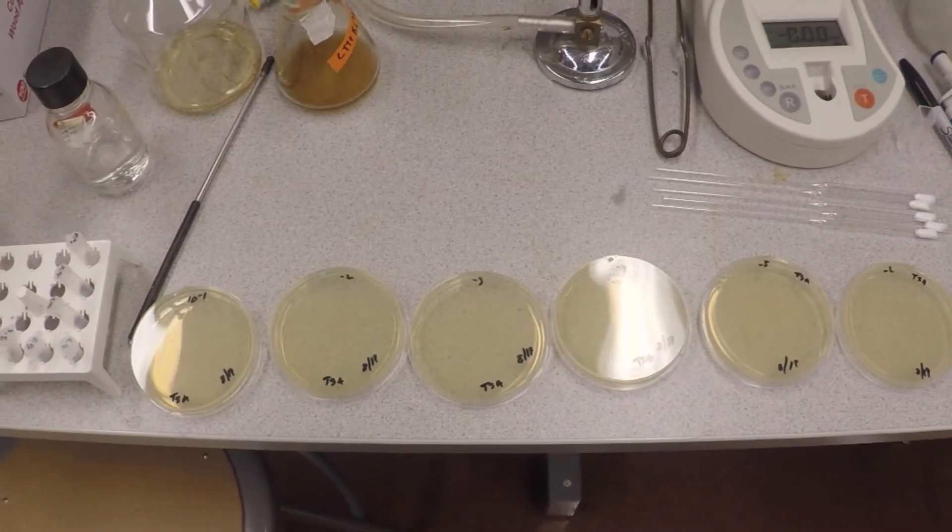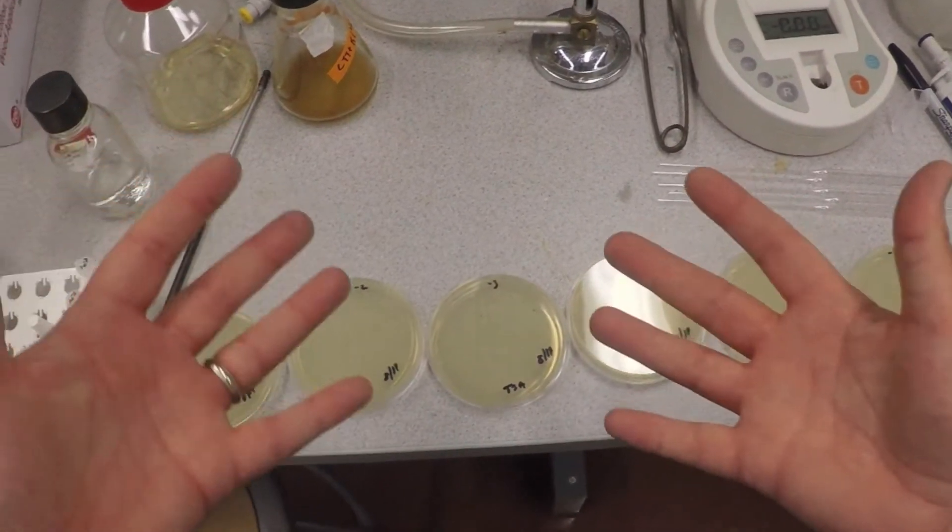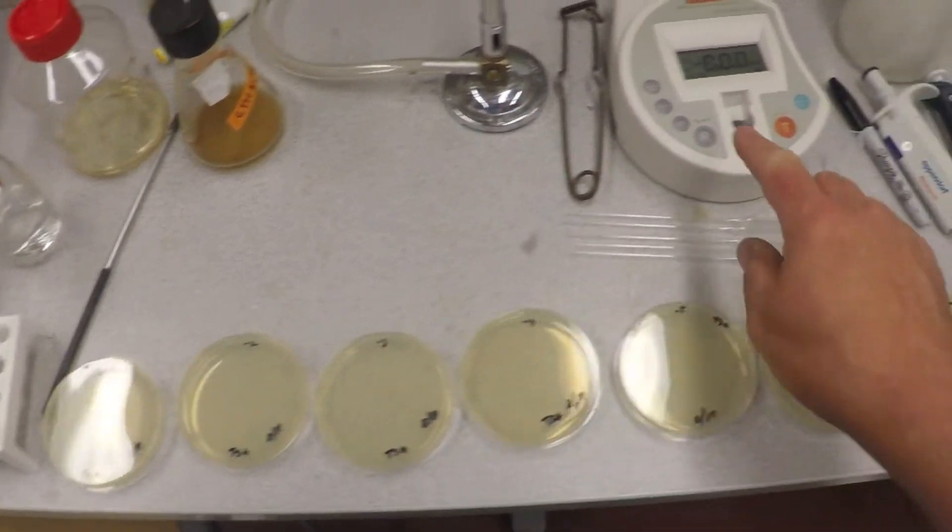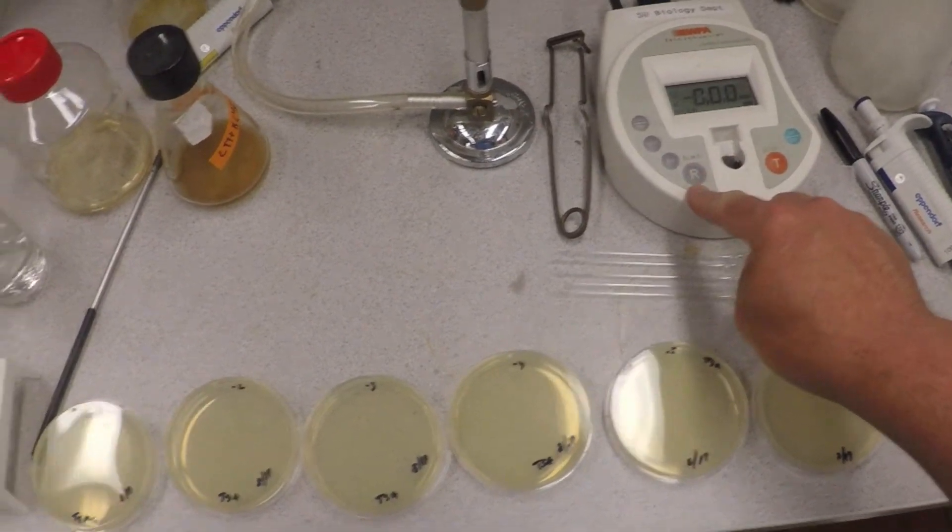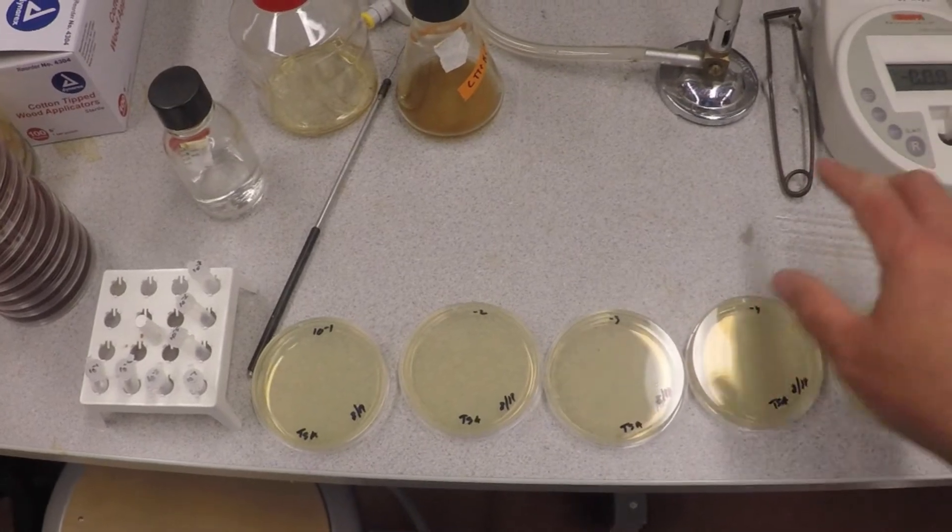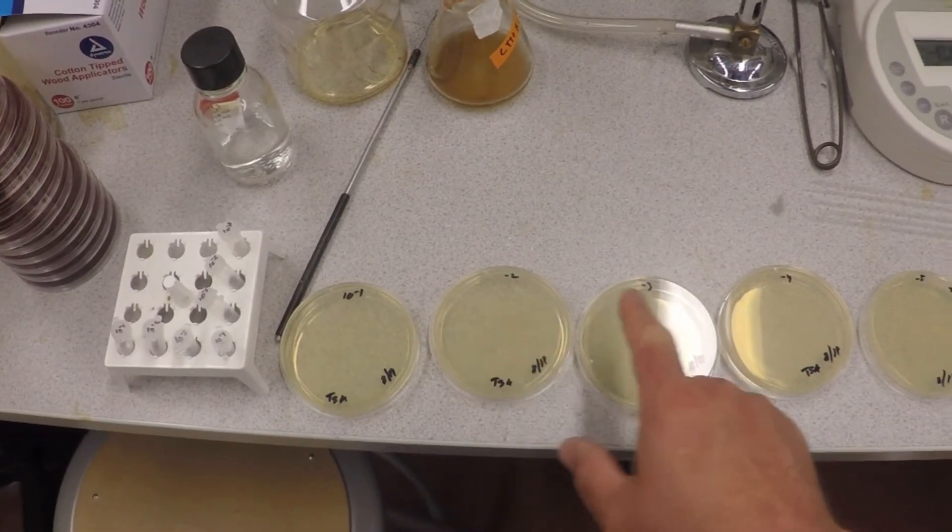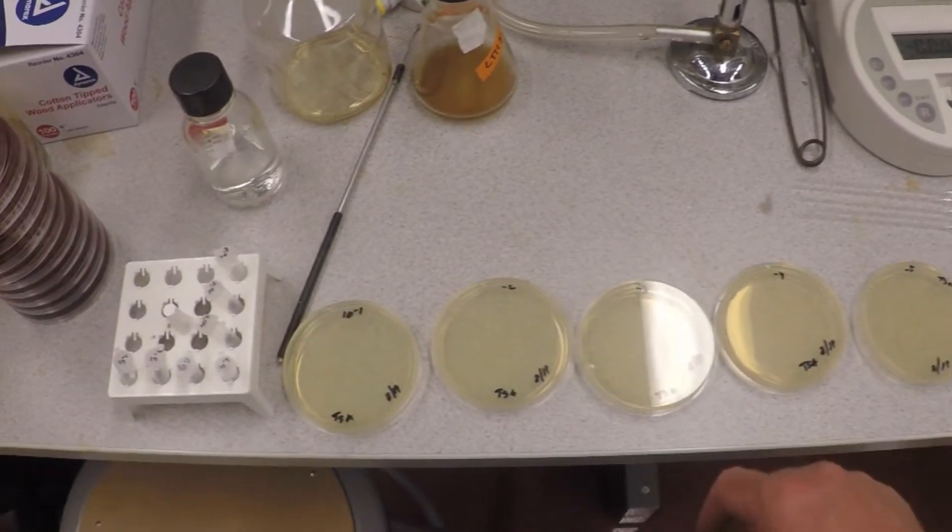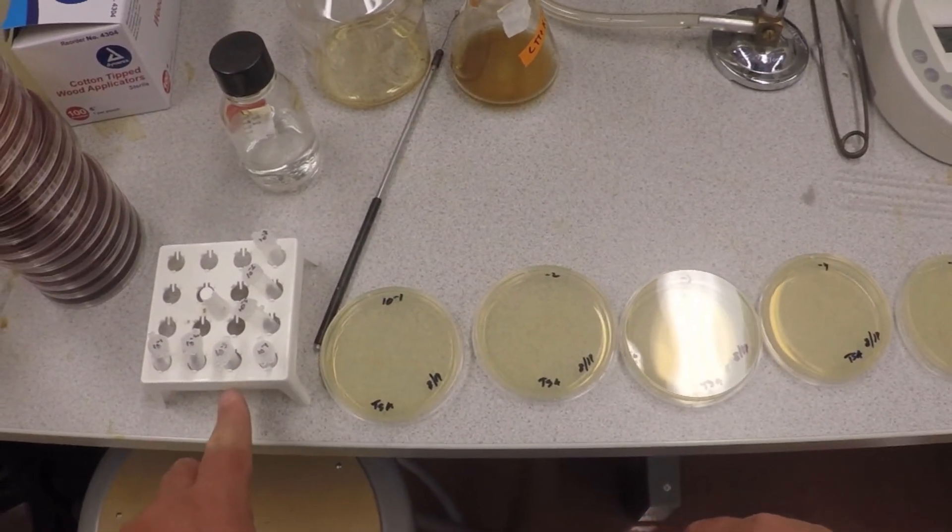Now we're going to show you how to do some basics on quantifying bacteria. There's a couple ways we're going to do it. We're going to use a spectrophotometer and we're going to take the sample and make serial dilutions and plate them out onto serial diluted plates and show you how to make dilutions for those.